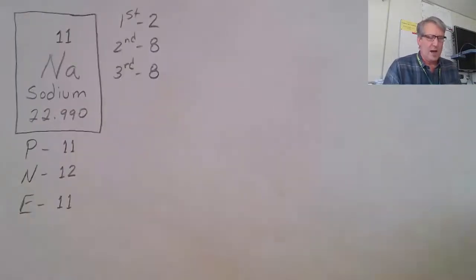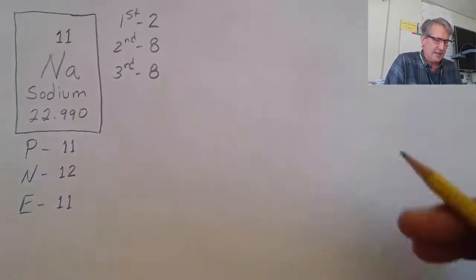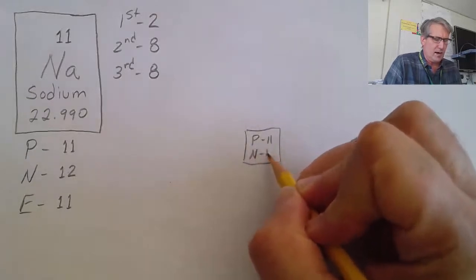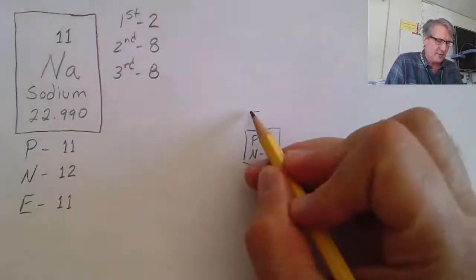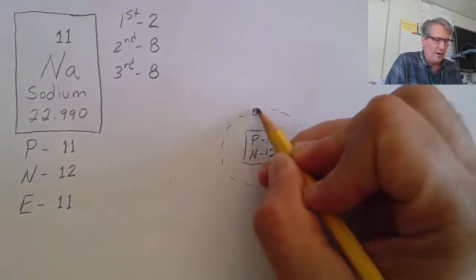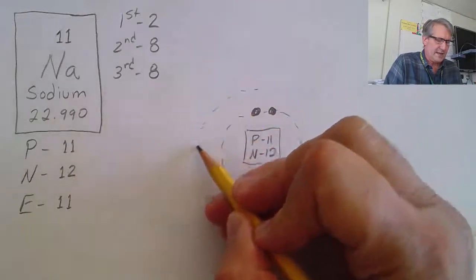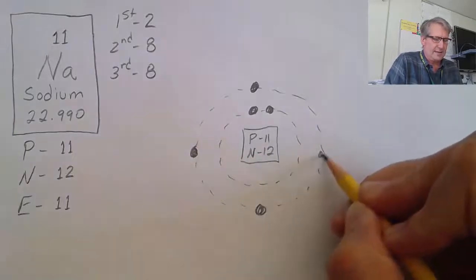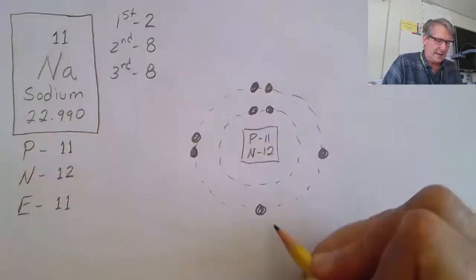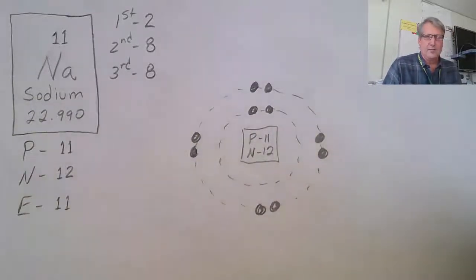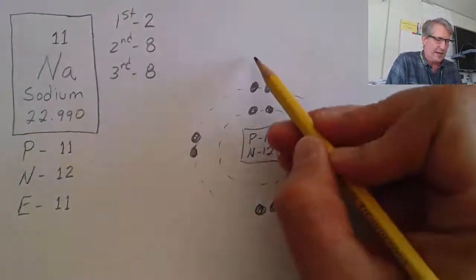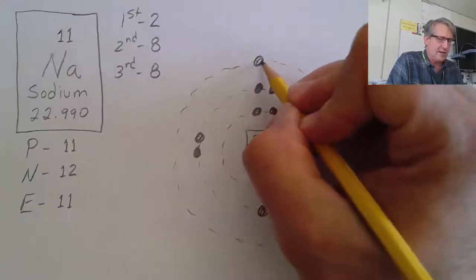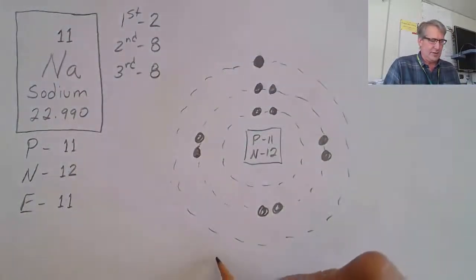Let's do one more — sodium. Sodium has 11 protons, 12 neutrons, and 11 electrons. Draw the nucleus with 11 protons and 12 neutrons. Draw the first energy level and place two electrons. We need a second energy level — place electrons three through ten, filling it up completely with eight. Since we've filled up the second energy level, we need a third energy level to hold that last electron — number eleven. That is sodium.